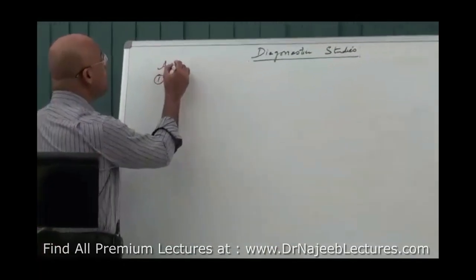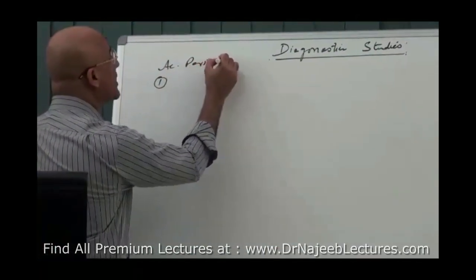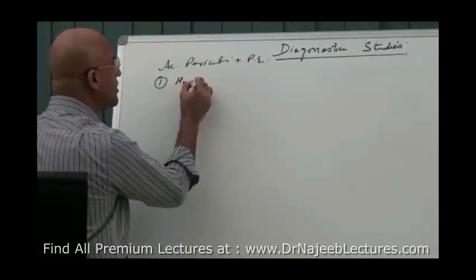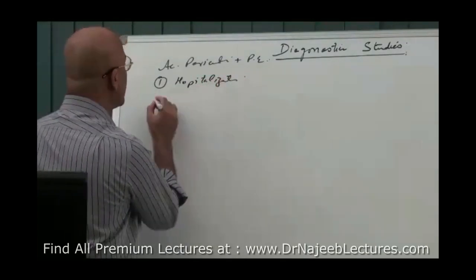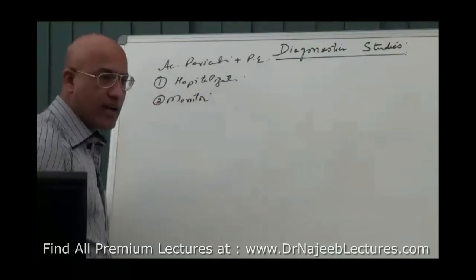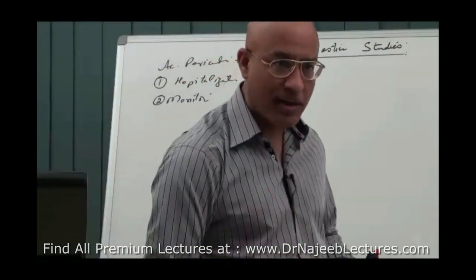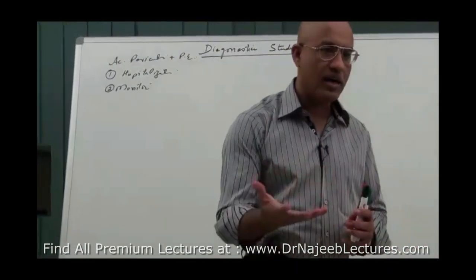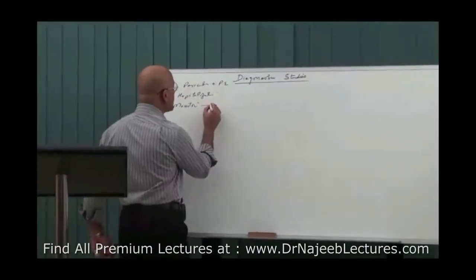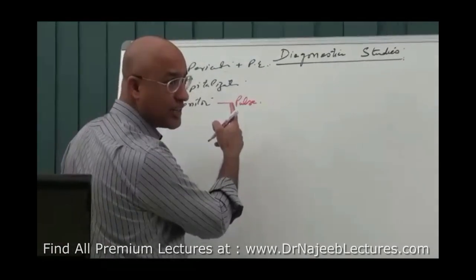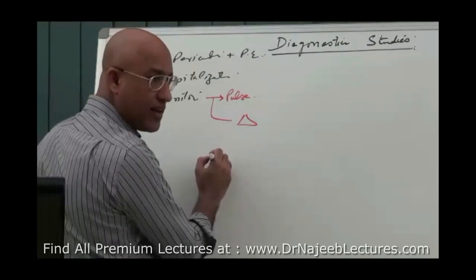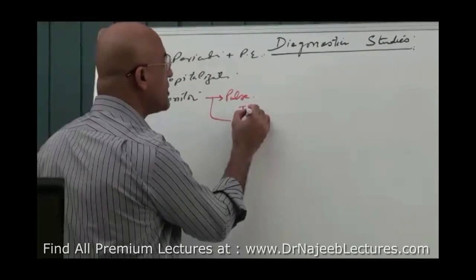First step in case of acute pericarditis with pericardial effusion - step number one is hospitalization and with that you monitor the patient. Now you will monitor for what? You are worried that the patient should remain hemodynamically stable and you keep looking for signs of hemodynamic deterioration. Patient should be on cardiac monitor on ECG. You will repeatedly look for jugular venous pressures.